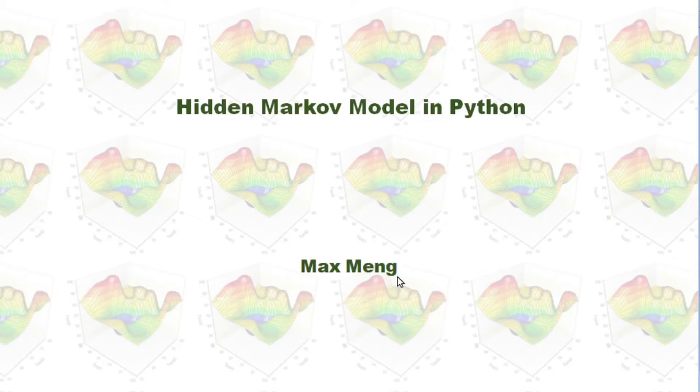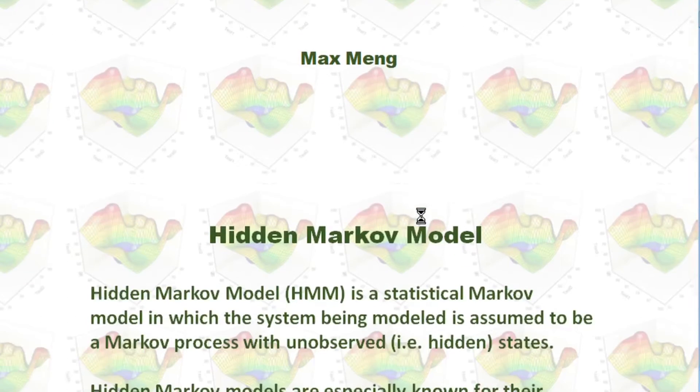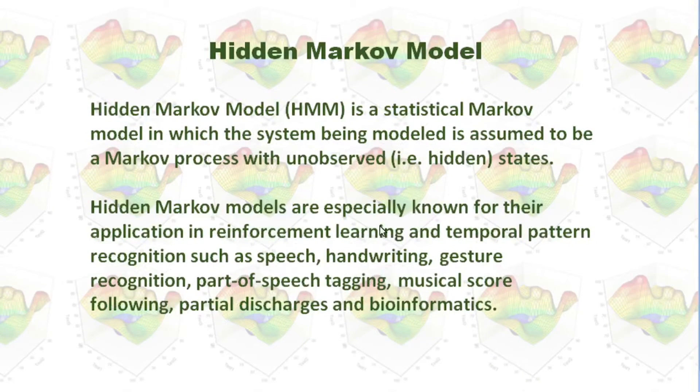This time I'm going to talk about Hidden Markov Model in Python. Hidden Markov Model is a statistical Markov model in which the system being modeled is assumed to be a Markov process with unobserved states or hidden states.